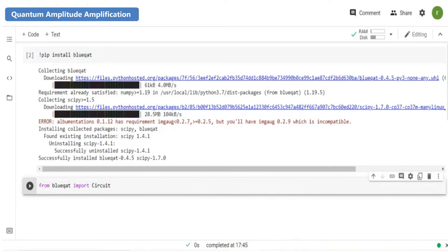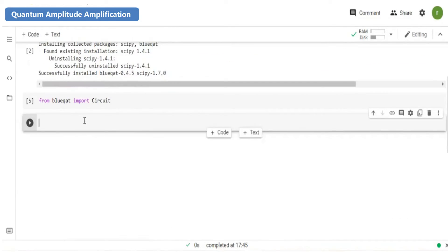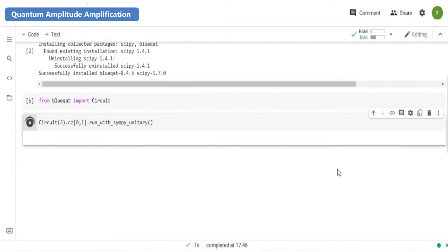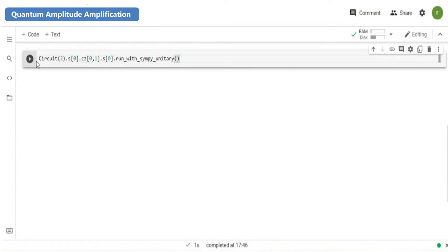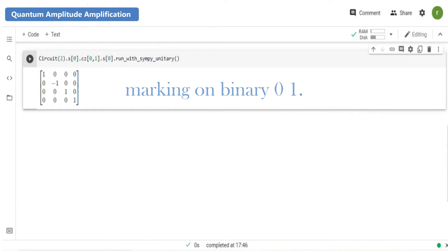We can check the unitary matrix of the circuit by running this function and we usually start from the diagonal matrix of CZ gate first and changing it. This output is for marking on binary one one. This output is for marking on binary zero one. This output is for marking on binary zero zero.